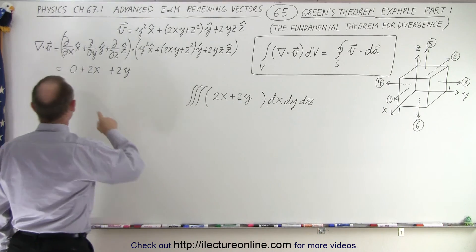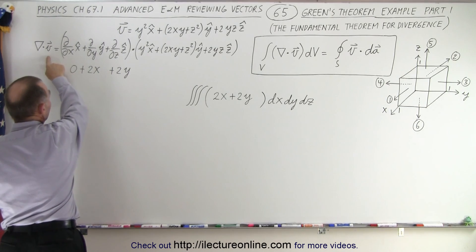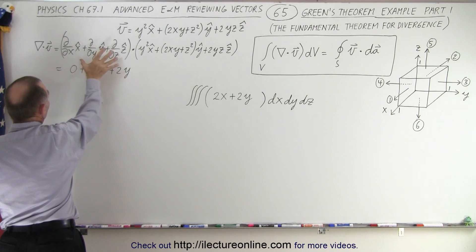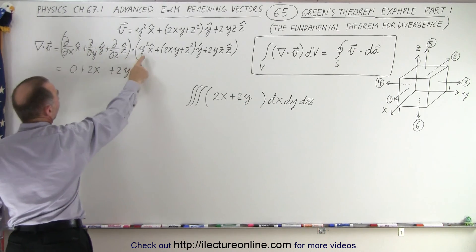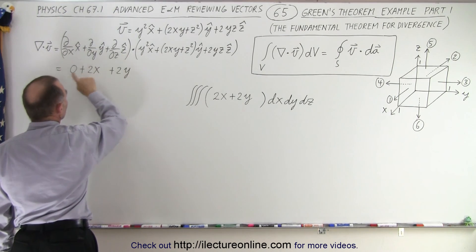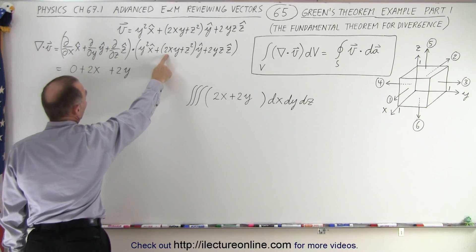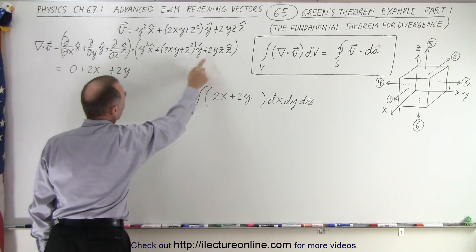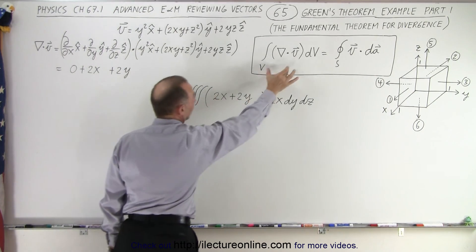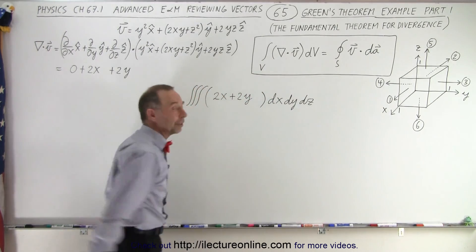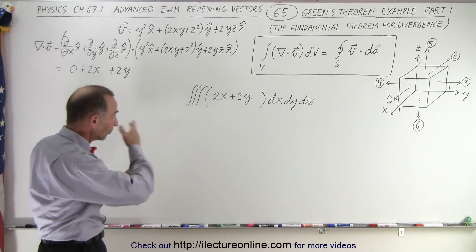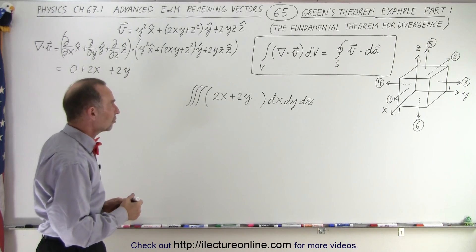So quickly what we did here is we took the divergence of the vector field right here. Notice that on the first term, since there's no x in there, you get zero. On the second term we have 2x. On the third term we get 2y. So we place that in here as the divergence of the vector field times the volume element dx, dy, dz because we have to integrate over all three dimensions.